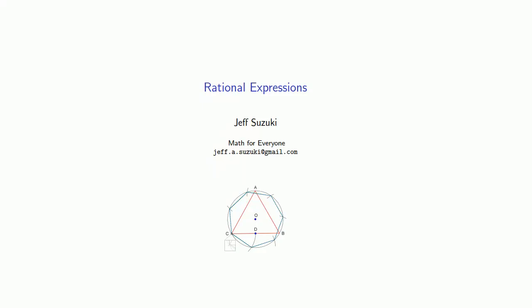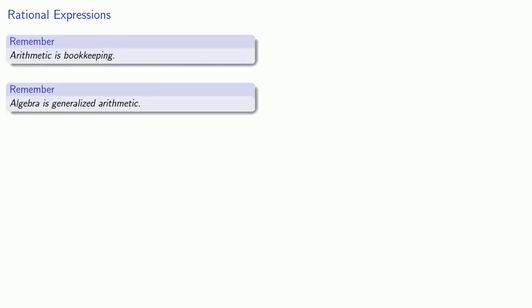So what else can we do with a polynomial? Remember, there's two useful ideas to keep in mind. First, arithmetic is bookkeeping. And second, algebra is generalized arithmetic. And so this leads to the idea of a polynomial. A polynomial is a generalization of the concept of a whole number.